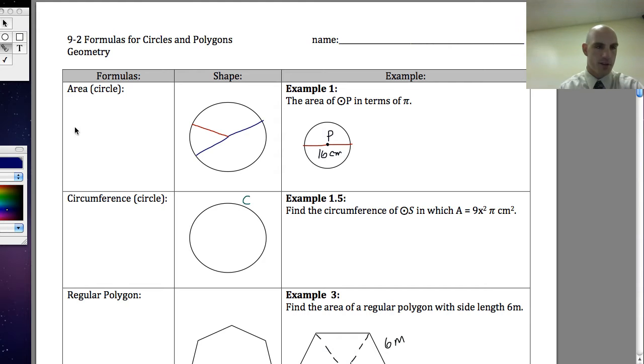The formula for the area of a circle, if you don't already know it, is equal to pi times radius squared. We are going to try to leave it in terms of pi because on standardized tests it's going to leave it in terms of pi. So our answers are going to have pi in them. We're not going to multiply by 3.14, we're just going to leave it in terms of pi.